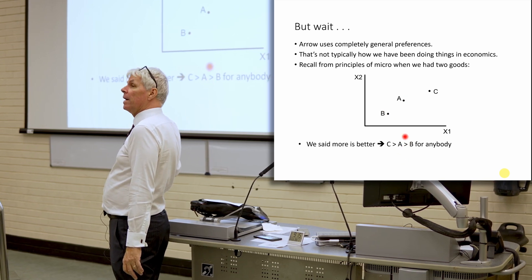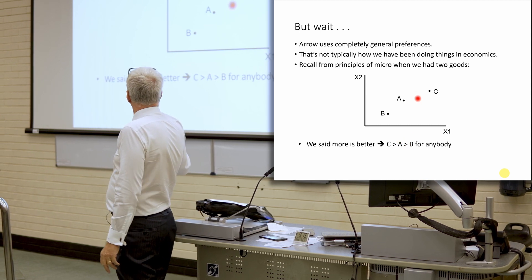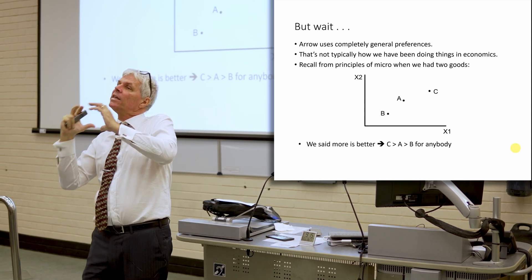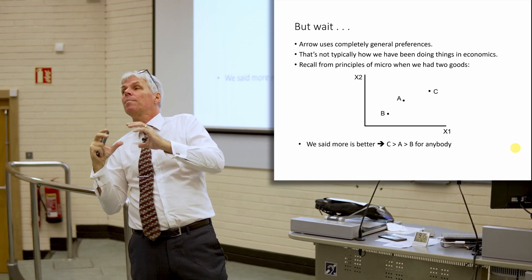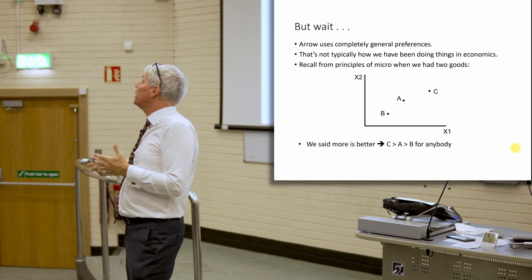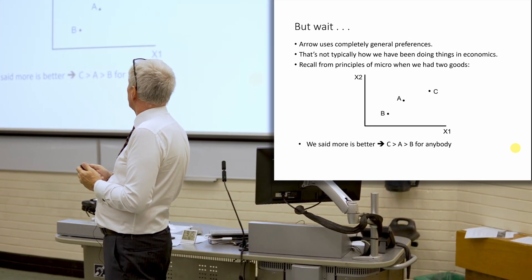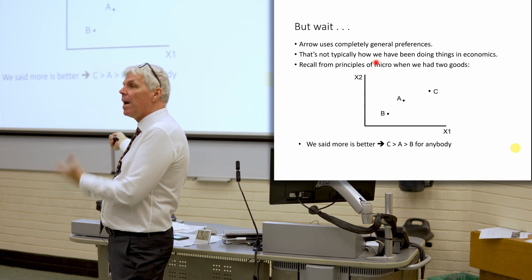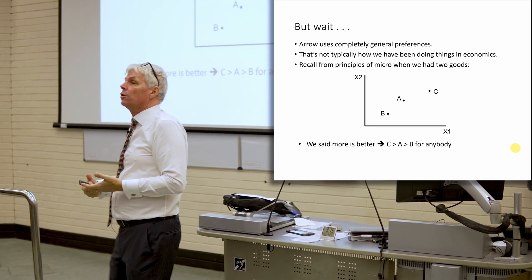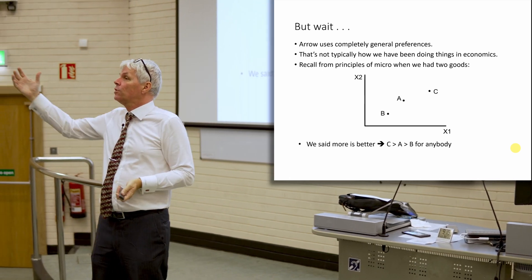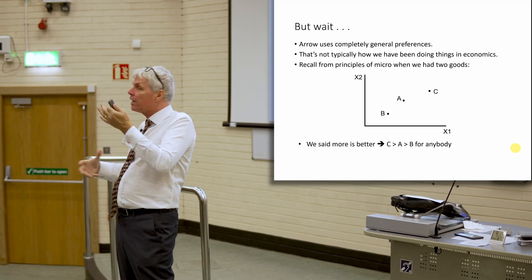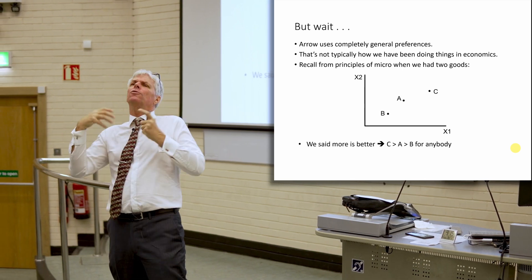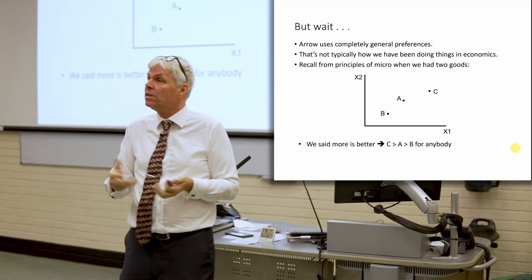We buy up to the point where we're trading off buying a little more of this versus a little more of the other. So we say, for typical economics problems, more is better. And A has more of both X1 and X2 than B, so A has got to be better than B for everybody. And C has more of both goods than A, so C has got to be better than A. So we impose that structure on preferences.